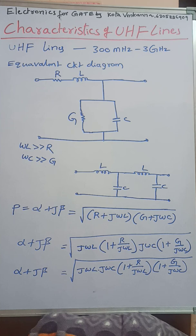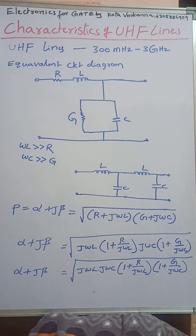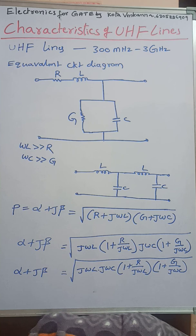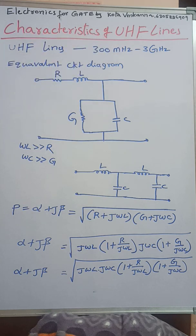Today I want to discuss the topic: characteristics of UHF lines, or describe the characteristics of UHF lines. UHF is ultra high frequency. The range of frequency is between 300 megahertz to 3 gigahertz. This range of frequency is known as ultra high frequency.